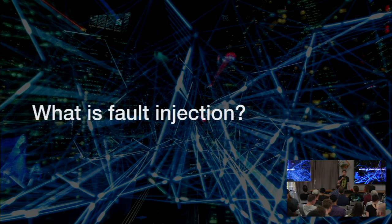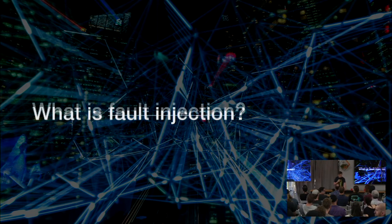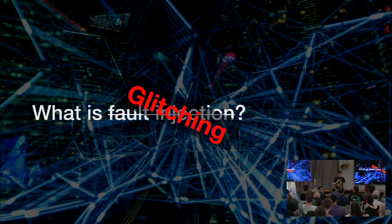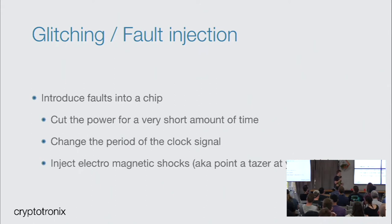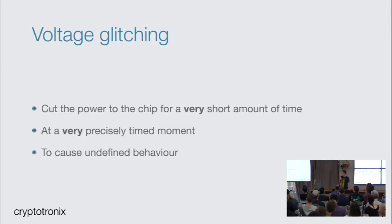So what is fault injection? Fault injection is a term that professionals use — we call it glitching. The theory behind glitching is we want to introduce small mistakes into chips. For example, we cut the power for a very short amount of time, think like 10 nanoseconds, we change the period of the clock signal, or we even point a taser onto the chip and see what happens with a strong EMI shock. The most common way is called voltage glitching.